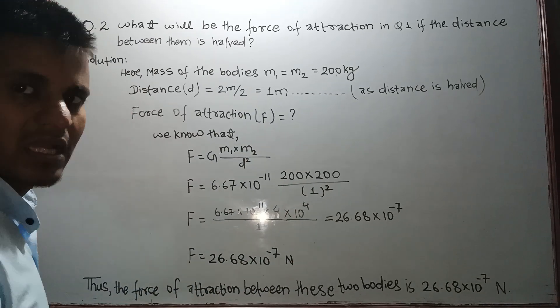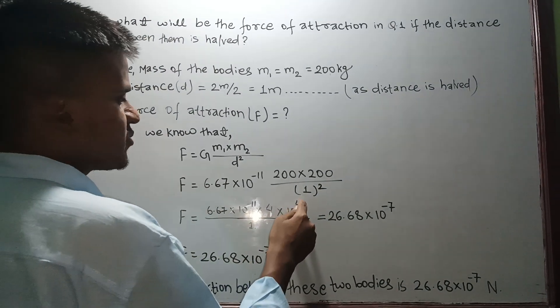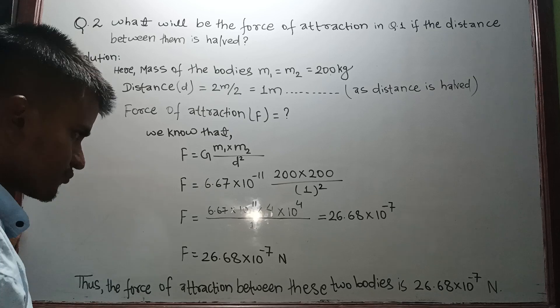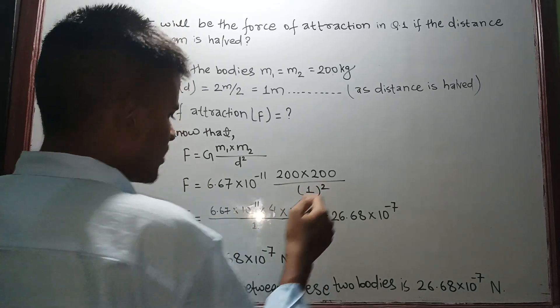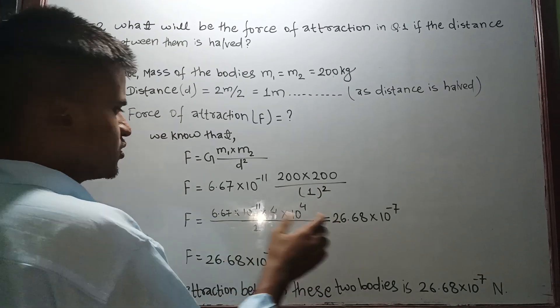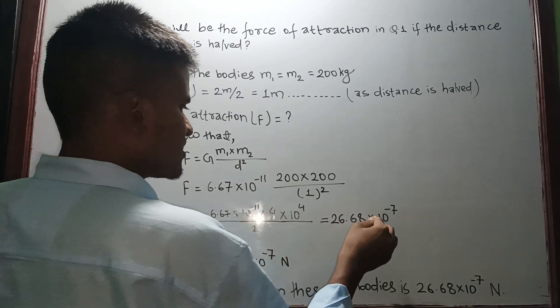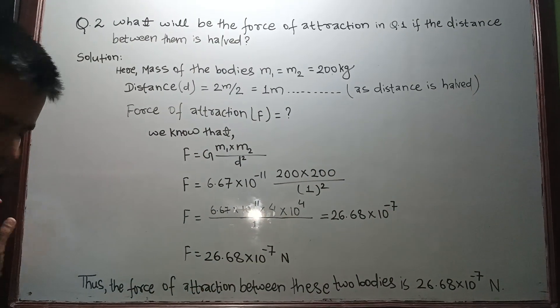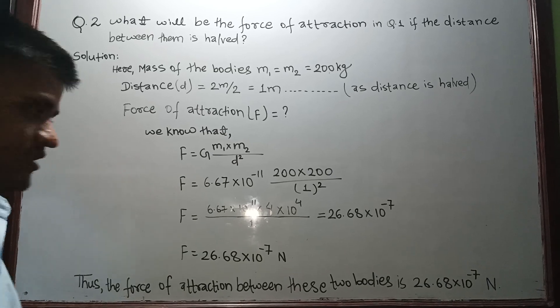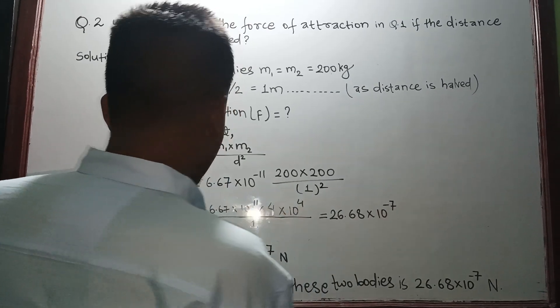So the value will be 26.68 × 10⁻⁷. But see, there is something missing. What is the unit of force? Newton. So now we can write force equals to 26.68 × 10⁻⁷ Newton.